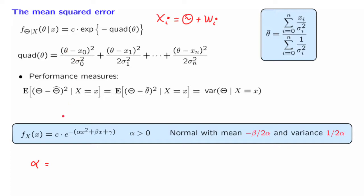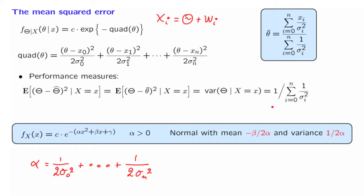We find that the overall coefficient next to the theta-squared terms is as follows. From the prior term we obtain a contribution of 1 over 2σ₀². Similarly, from the first noise term we obtain 1 over 2σ₁², and we continue this way through all n measurements. Taking this factor of 2, moving it to the other side, and taking the inverse gives us 1 over 2α. We have thus found the conditional variance — the variance of the posterior distribution of theta given the data.